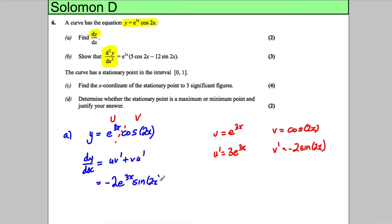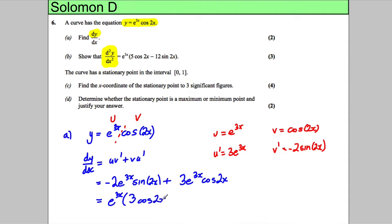And v·u' gives 3e to the 3x cos 2x. We can factorize out the e to the 3x to get negative 2 sine 2x plus 3 cos 2x. Rewriting that more neatly: dy/dx equals e to the 3x times (3 cos 2x minus 2 sine 2x). That is our dy/dx.